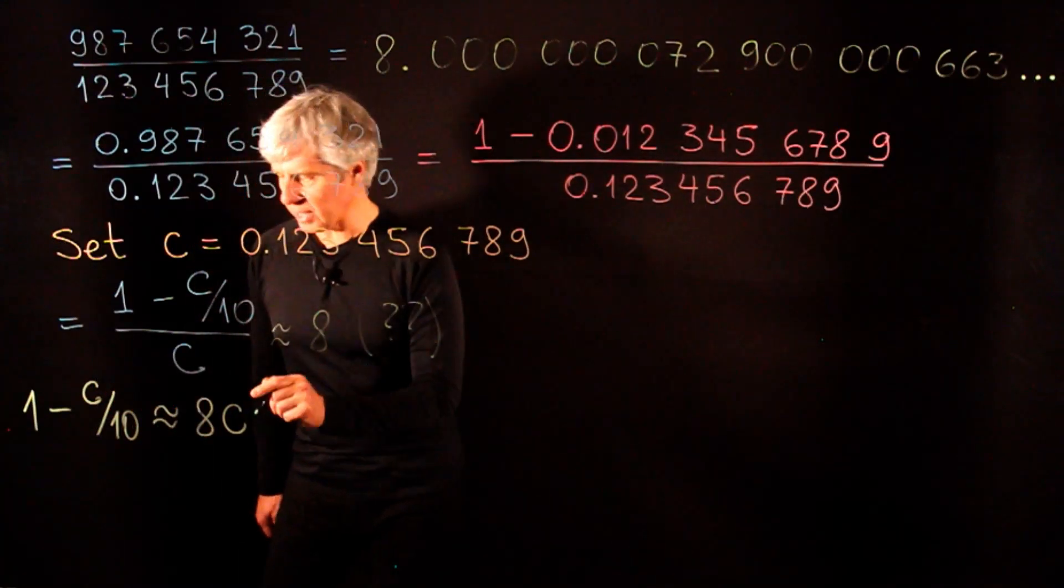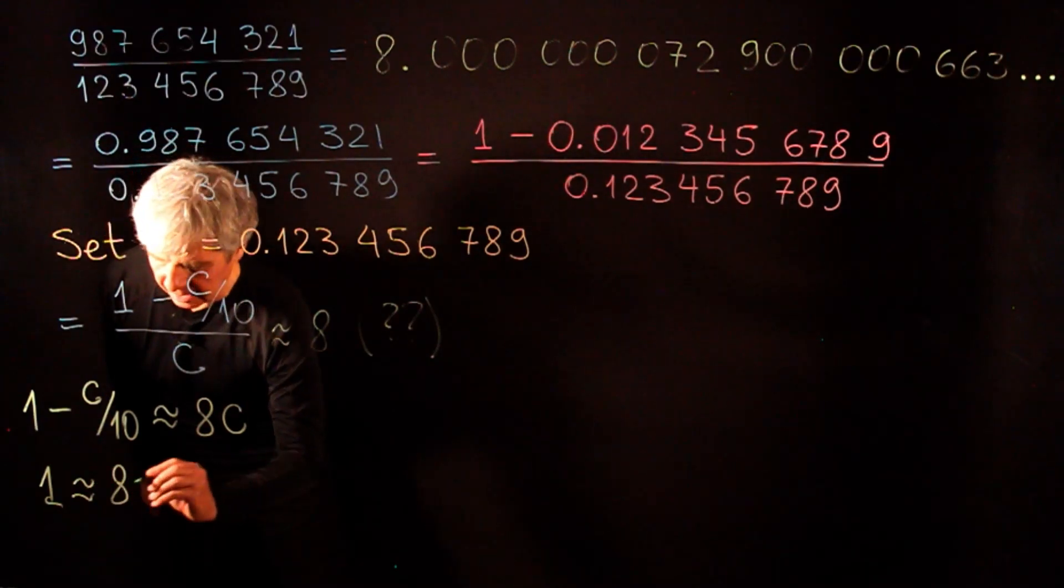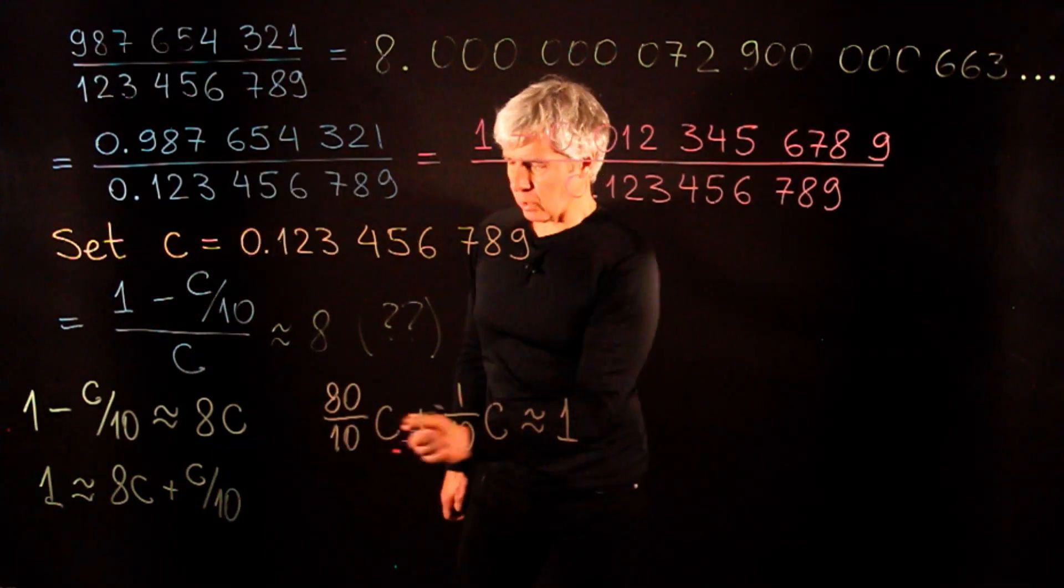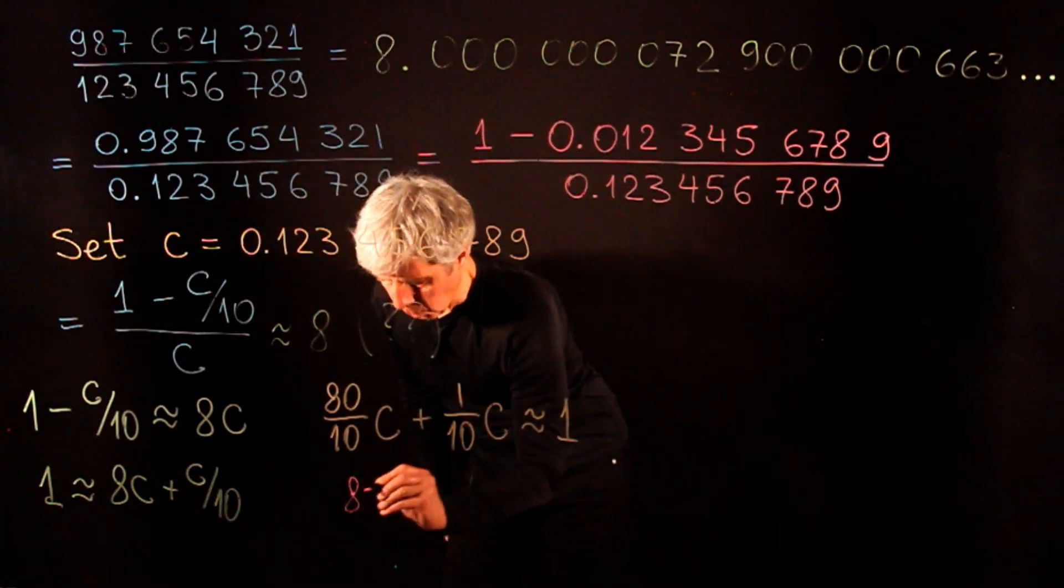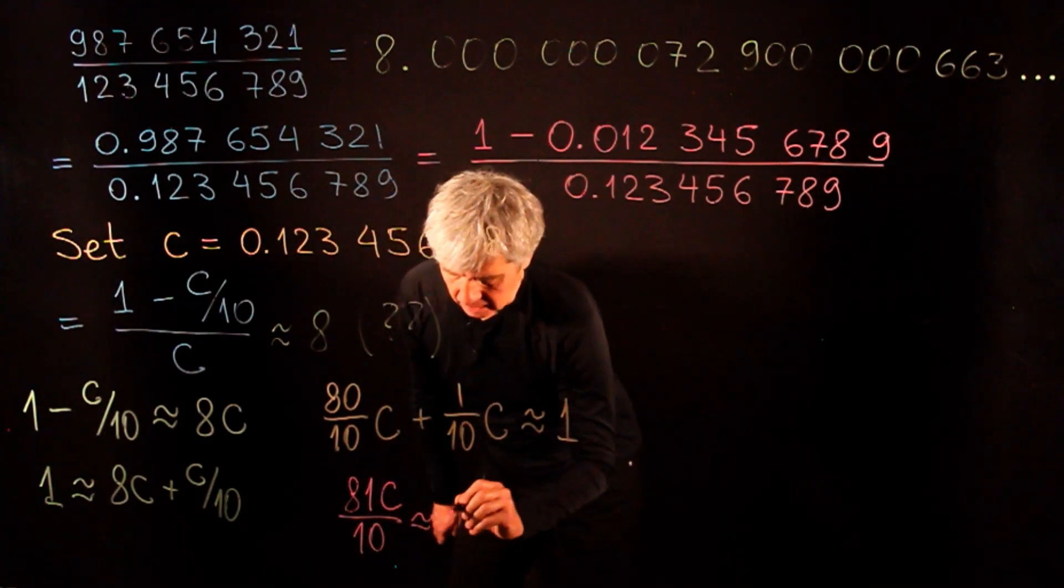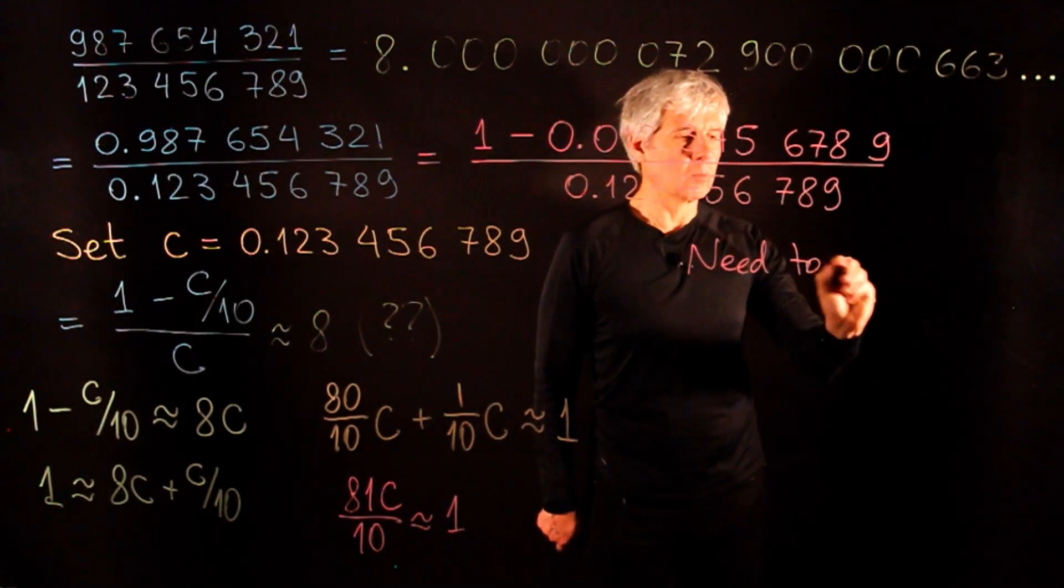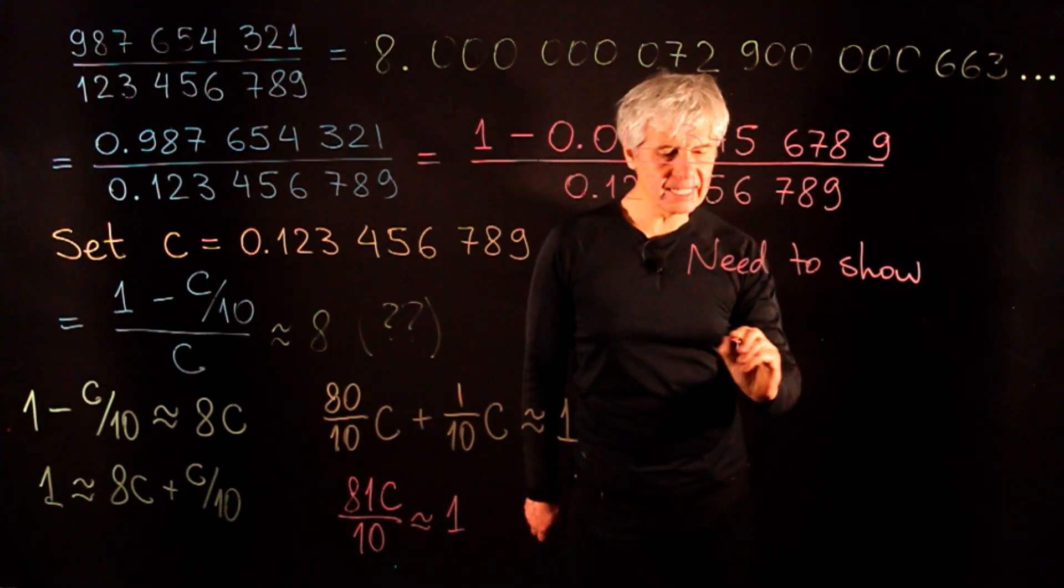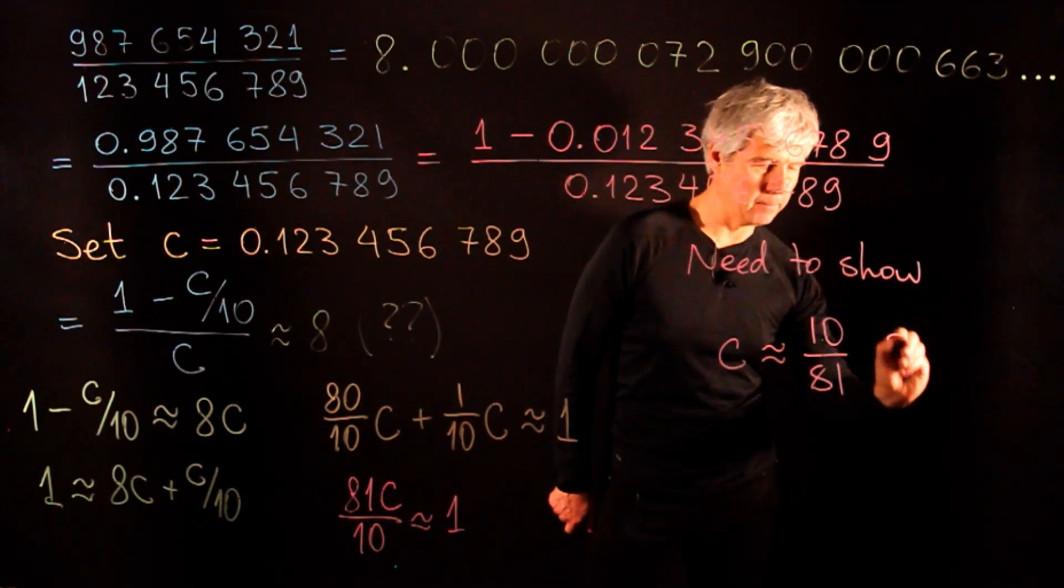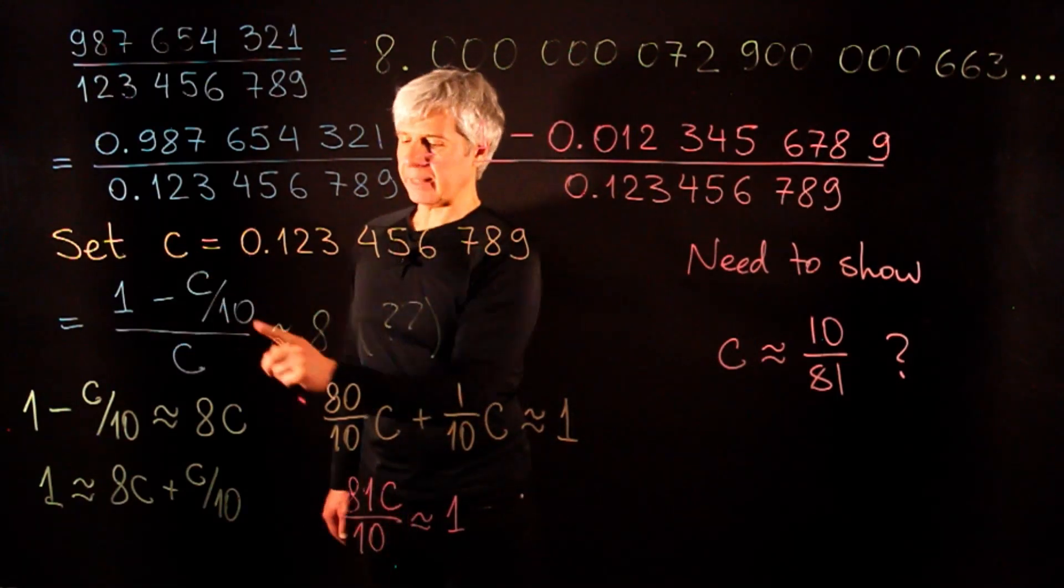Or if we move this to the other side, then we will get that 1 is approximately equal to 8c plus c over 10. If we bring this to a common denominator, we will get 81c over 10 is approximately equal to 1. So this means that we need to show that c is approximately equal to 10 over 81. If the value of c were exactly 10 over 81, then here we would get exactly 8.